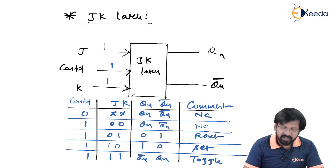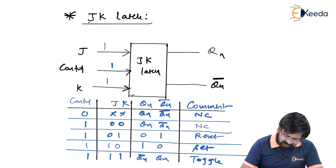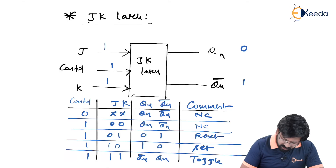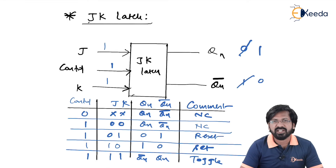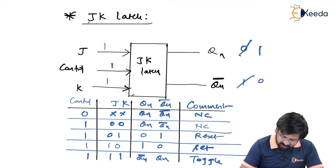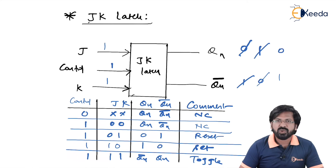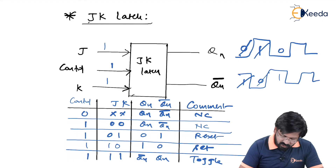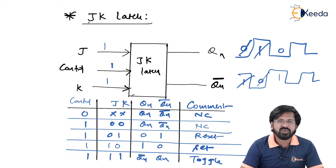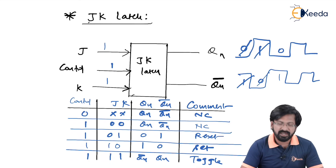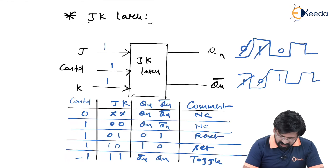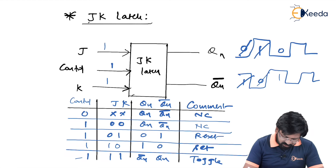When J equals 1, K equals 1 and control equals 1, the inputs make sense. Let us assume the previous output of Qn and Qn bar were 0 and 1 respectively. With J equals 1 and K equals 1, the outputs change — 0 becomes 1 and 1 becomes 0. This is what we call toggling. If we keep J equals 1 and K equals 1 again, 1 becomes 0 and 0 becomes 1, giving a continuous 0 1 0 1 on Qn and 1 0 1 0 on Qn bar. The application of J equals 1 and K equals 1 is to generate a continuous square wave on Qn and Qn bar.